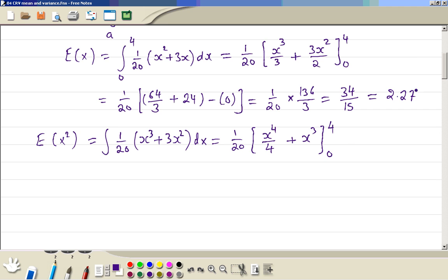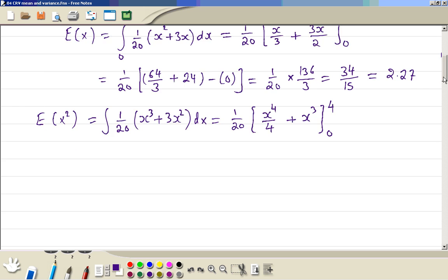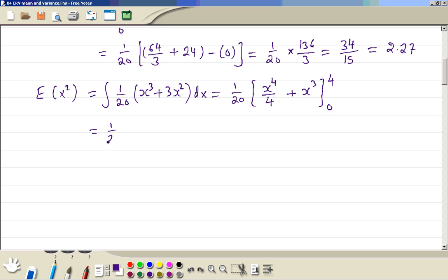Now we can substitute the limits. So x to the power of 4 means 4 to the power of 4 divided by 4 is just 64. x cubed, 4 cubed is 64. So we get the answer 128 divided by 20, which can be simplified to 32 divided by 5, which is 6.4.